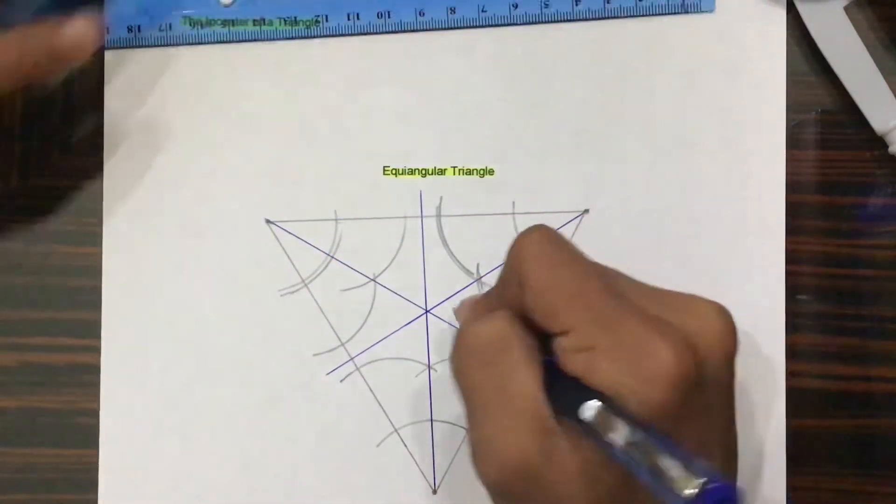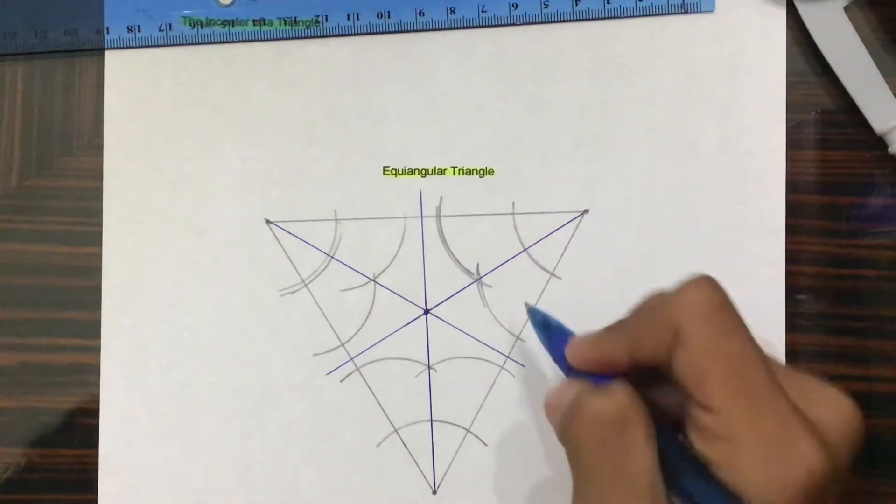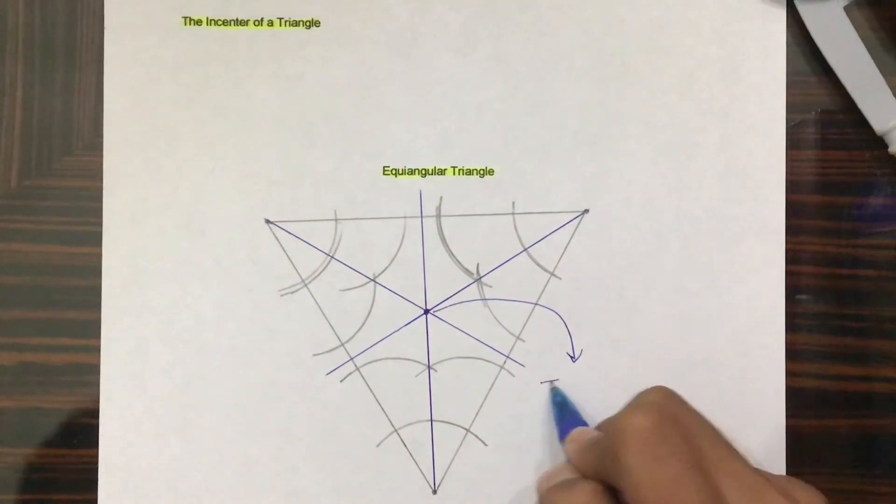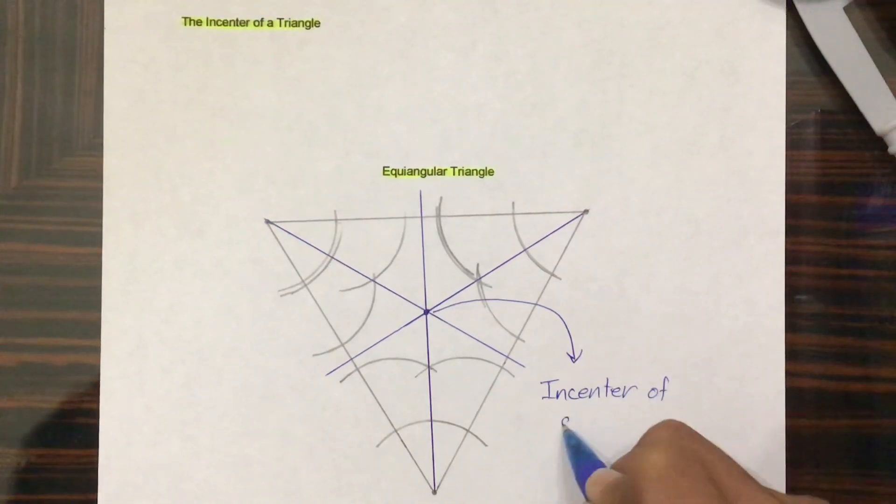So as you can see, they all meet at this one point of concurrency called the in-center of a triangle.